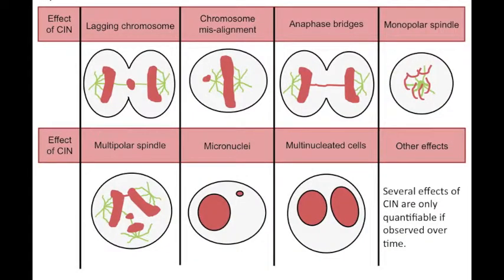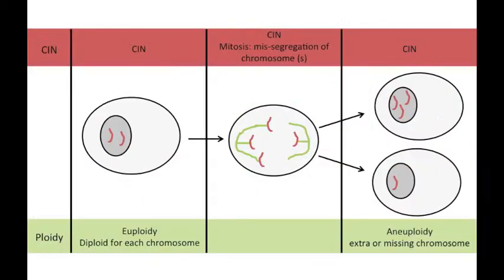Chromosomal instability, or CIN, is the process of chromosome missegregation during mitosis, which can lead to an altered copy number of chromosomes within the cell, also known as aneuploidy. While these two things are connected, they are not the same thing.